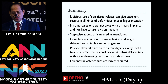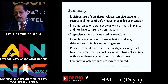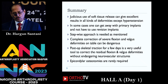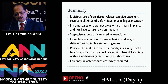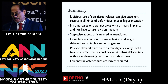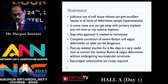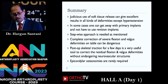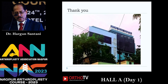In summary, judicious use of soft tissue release can give excellent results in all kinds of deformity, except hyperextension — that goes without saying. In some cases one can get away with primary implants by doing good soft tissue release; otherwise, a typical example is valgus deformity where you can balance by doing lateral epicondylar osteotomy. A stepwise approach is essential — if the first step corrects the deformity, do not proceed to the second step. Complete correction of severe flexion and valgus deformity on the table can be dangerous and can cause foot drop. Post-op skeletal traction is a very simple and effective method I have been using for 13 years, with gradual correction and plaster cylinder if required. Epicondylar osteotomies are rarely required, usually in cases with bow femur where you want to correct intra-articularly. Thank you.